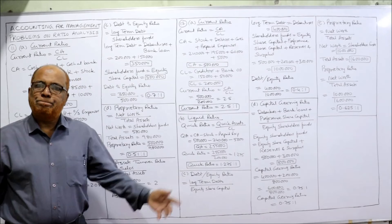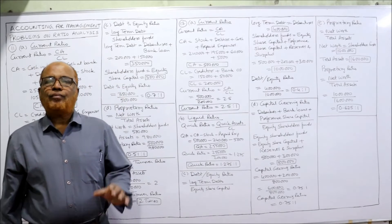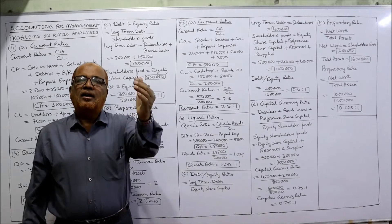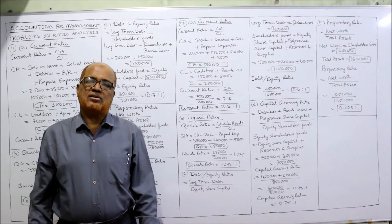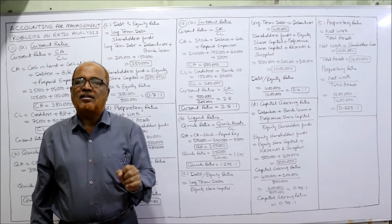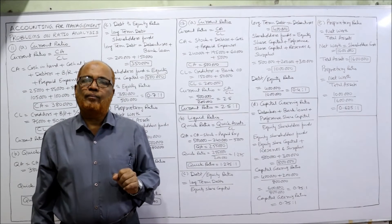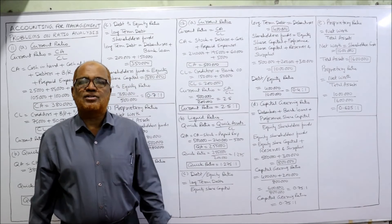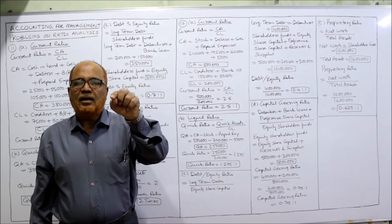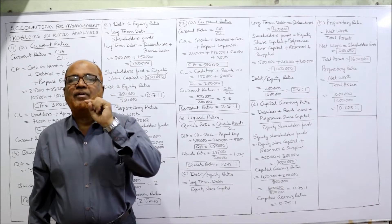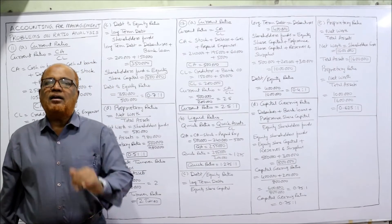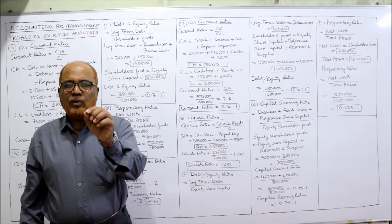Next is capital gearing ratio. The formula is funds bearing fixed interest and fixed dividend divided by equity shareholders funds. In the numerator we take funds on which there is a fixed rate of interest — debentures and bank loan — and funds with a fixed rate of dividend — preference capital. So in the numerator we include debentures, bank loan, and preference capital. The denominator is equity shareholders fund.